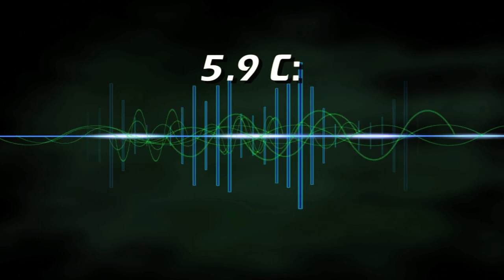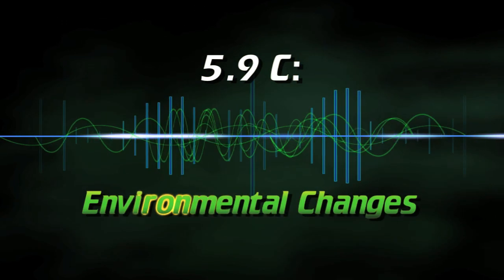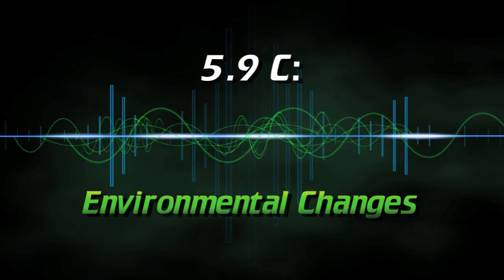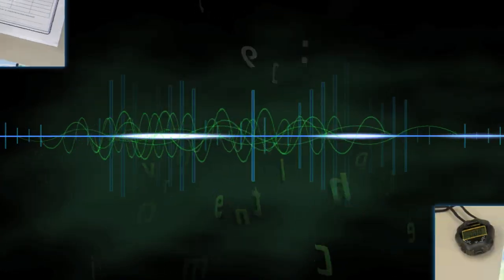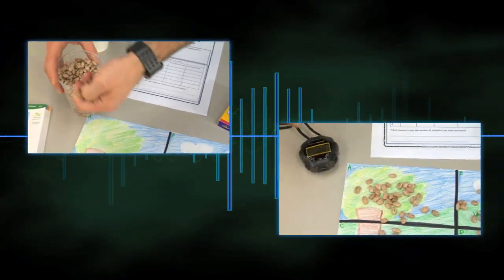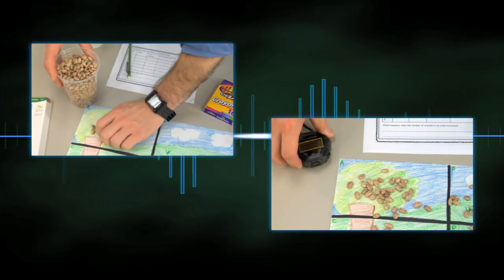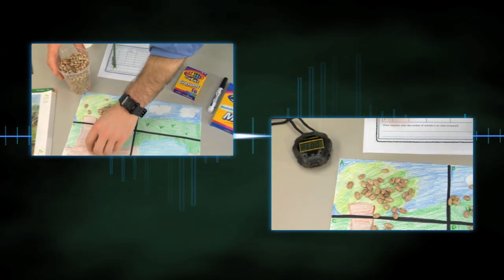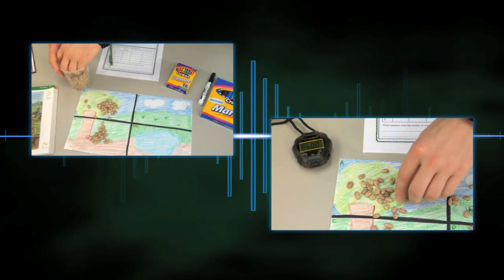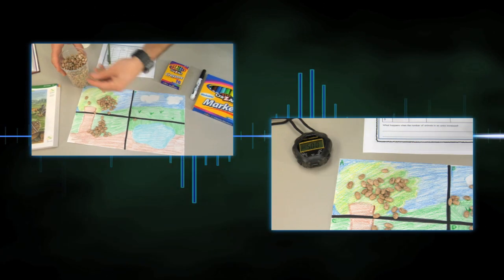5.9 C. Environmental Changes. In this activity, students act like grazing animals to examine how changes in the environment affect an ecosystem.